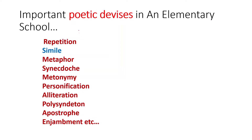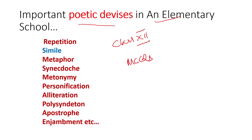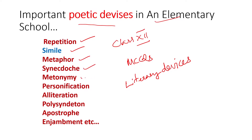Greeting students. This video lesson is to find out the poetic devices used in 'An Elementary School Classroom in a Slum.' It is for Class 12th CBSE students and is helpful to find out the right option for MCQs. The literary devices used in this poem include repetition, simile, metaphor, synecdoche, metonymy, personification, alliteration, polysyndeton, apostrophe, enjambment, and more.